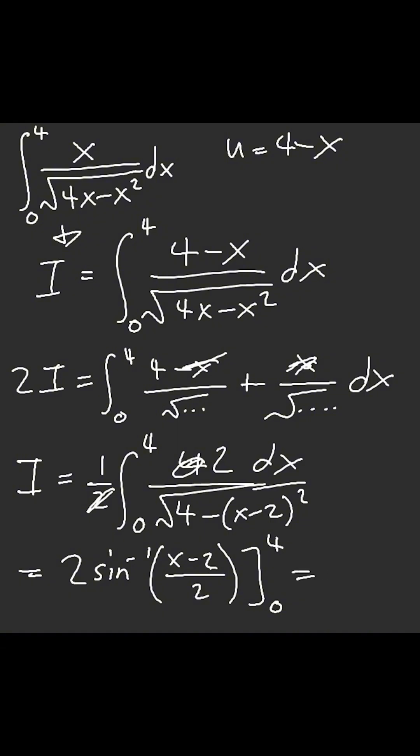And this should be 2. Inverse sine of 1 is pi over 2. That's pi. And then 0 negative... oh, that's crazy. We get 2 pi.